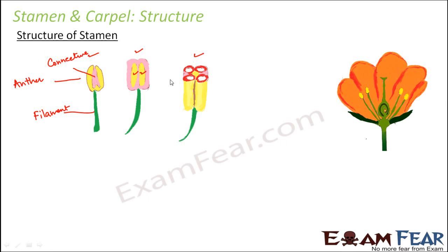Looking at the cross-section of the anther very closely, each lobe of the anther has two chambers. There are two lobes, and each lobe has two chambers, giving a total of four chambers. Each of these four chambers is known as a pollen sac.